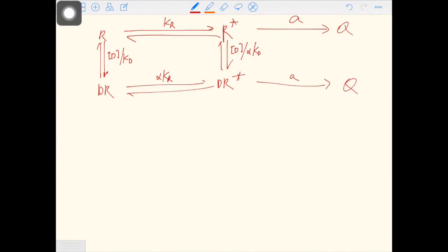There are two horizontal reactions. These two reactions are similar because they are the reactions between an inactive form and an active form. So the alpha here is to differentiate the rate constant of the top reaction and the rate constant of the bottom reaction.